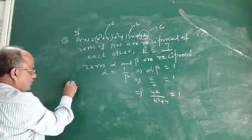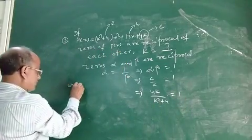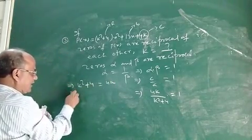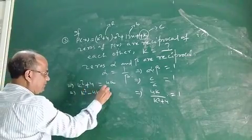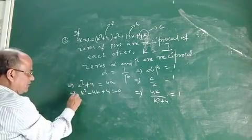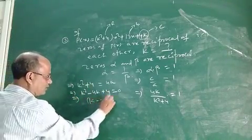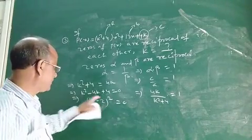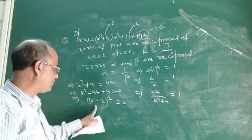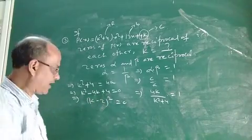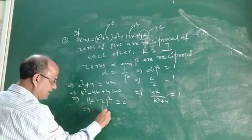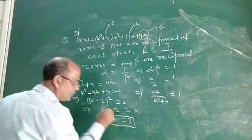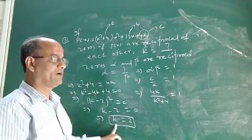Now solving: K squared plus 4 equals 4K. Rearranging gives K squared minus 4K plus 4 equals 0. This factors as K minus 2 whole square equals 0. So K minus 2 equals 0, and therefore K equals 2. The value of K is 2.